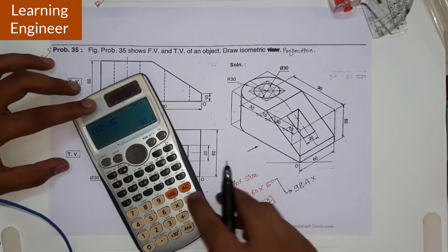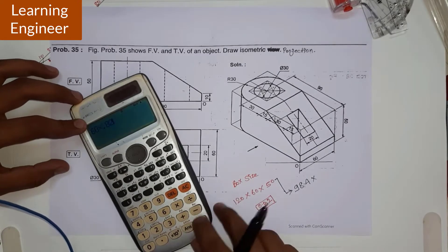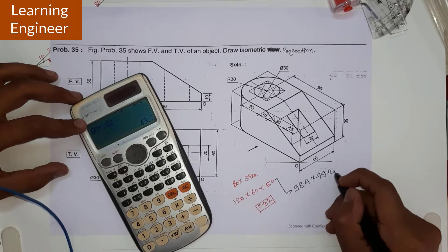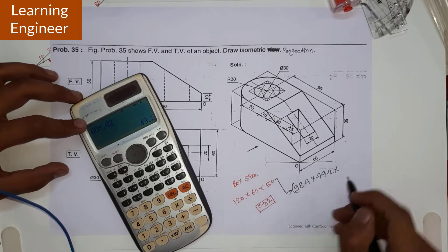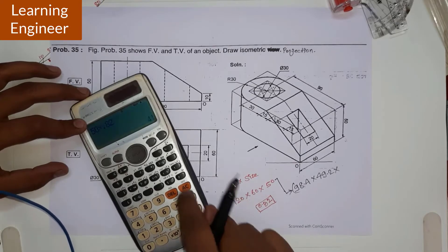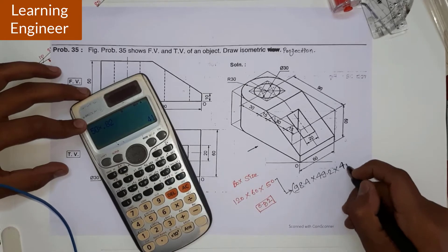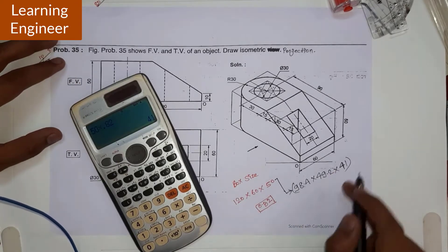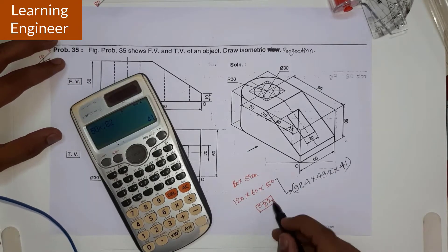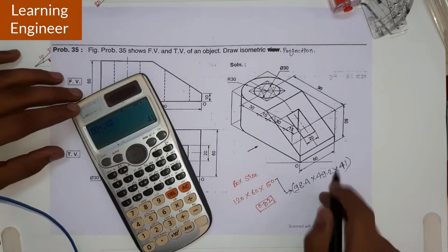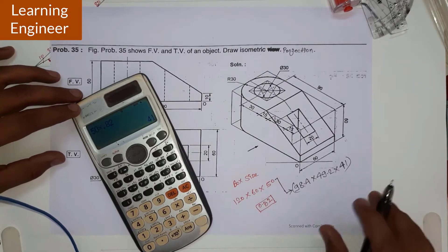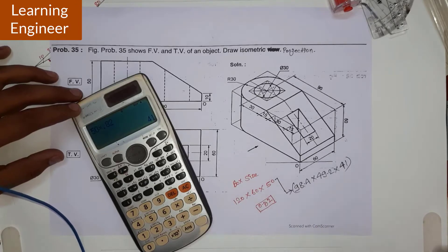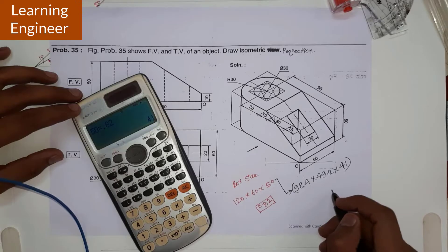60 into 0.82 gives 49.2, and 50 into 0.82 gives 41. So these are the actual isometric dimensions converted by multiplying the 0.82 factor. This is the actual box size. Any other dimension that needs to be used regularly also needs to be converted.